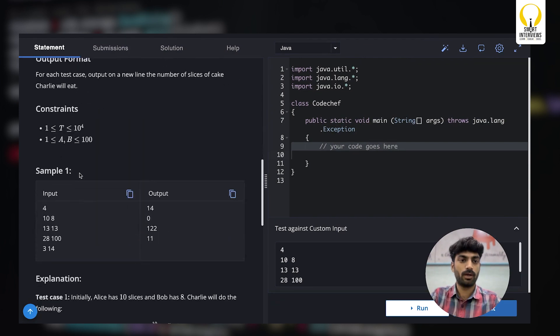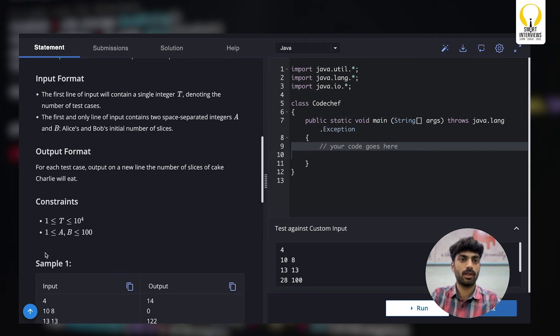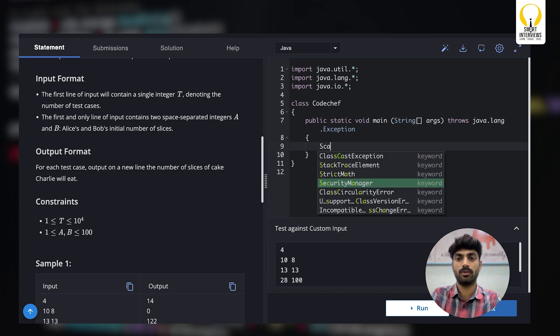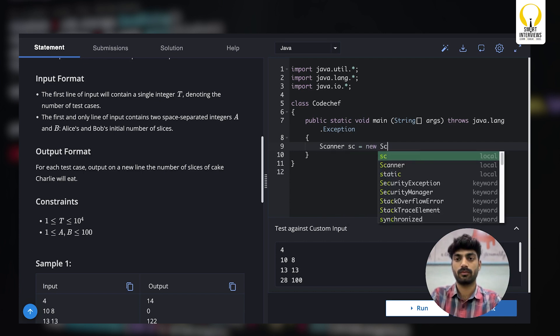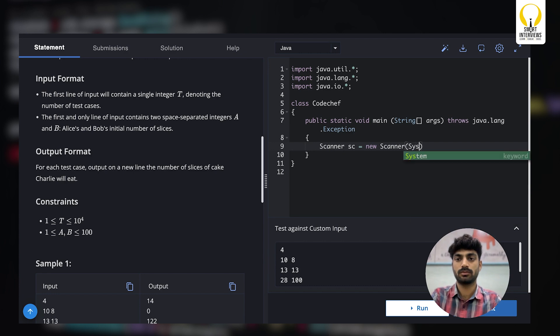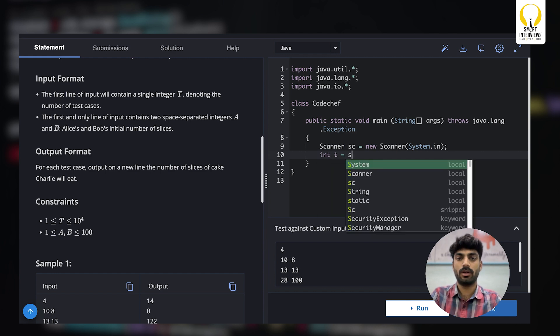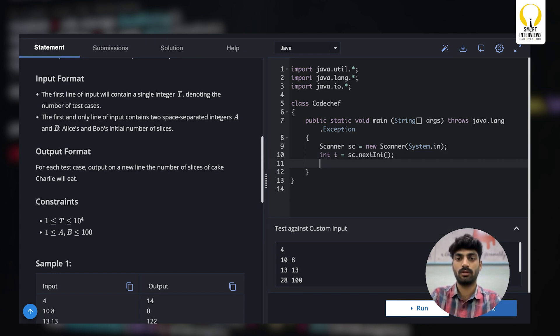Okay so the input format, first you are given test cases then A and B values. So let's start with scanner object. Then we need to read the number of test cases, then we'll iterate those many times. For each test case you will be given A and B so we'll scan them as well.